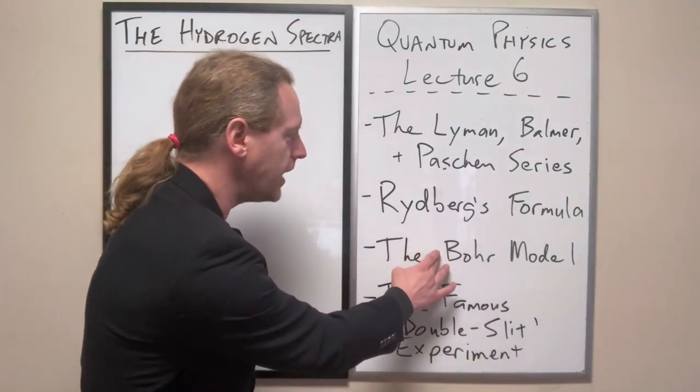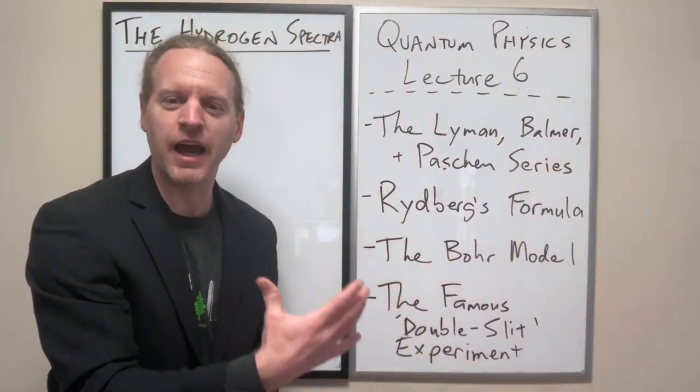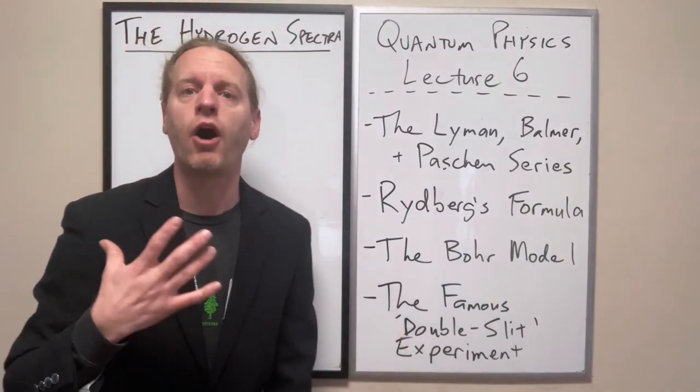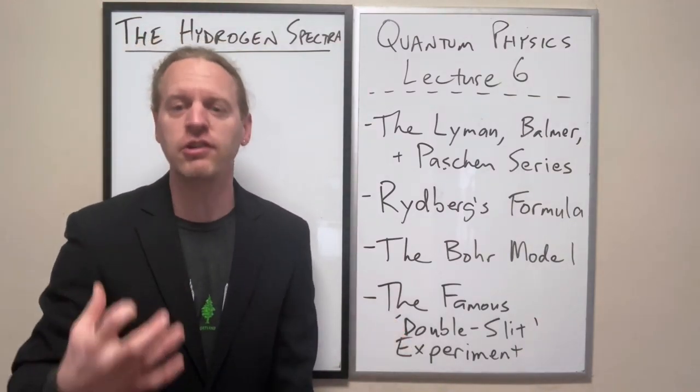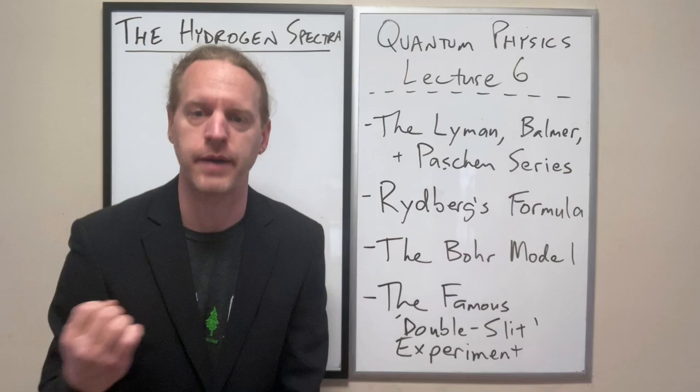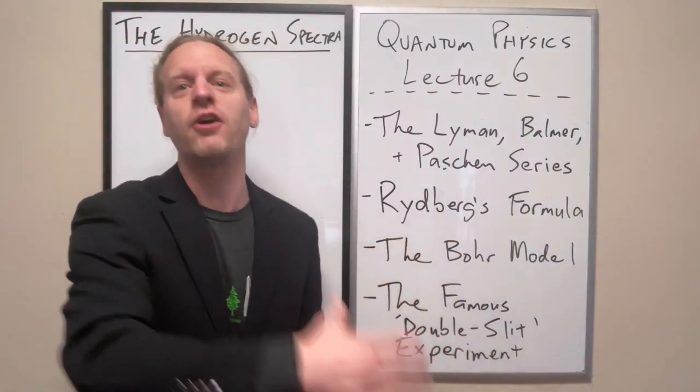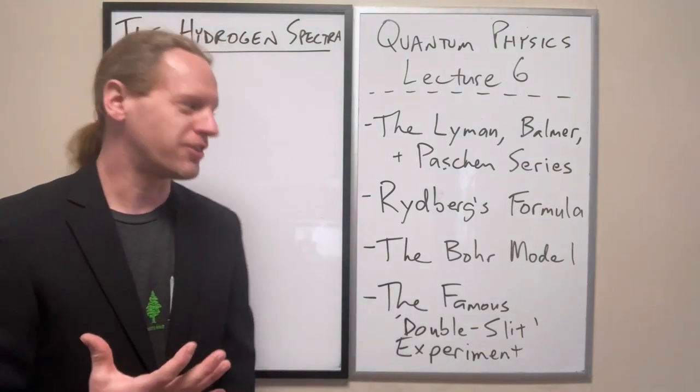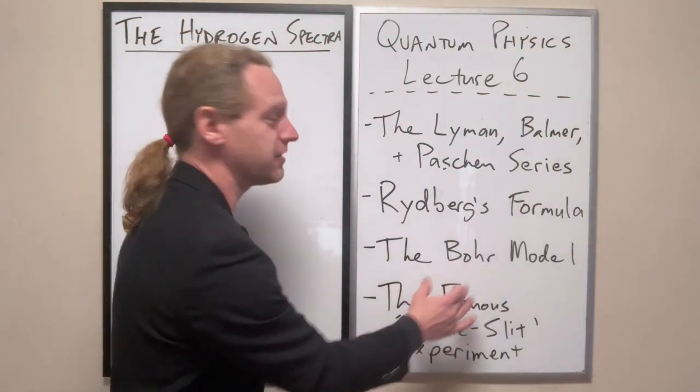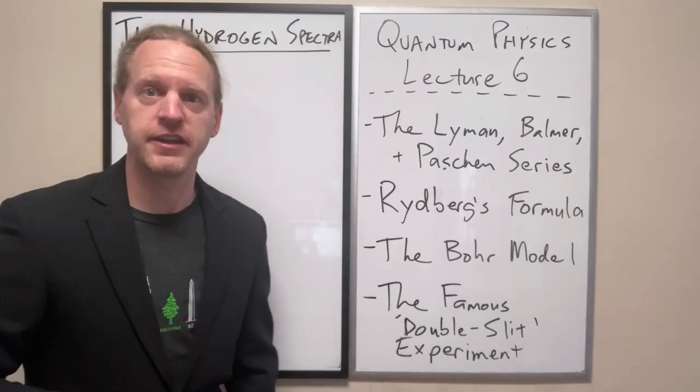Bohr tried to pretend this is how the hydrogen atom works, but the understanding all along was that we're not literally trying to describe how atoms work. We're trying to describe the mathematical predictions that result from how they work. As it turns out, if you take Bohr seriously, it's actually flat out wrong.